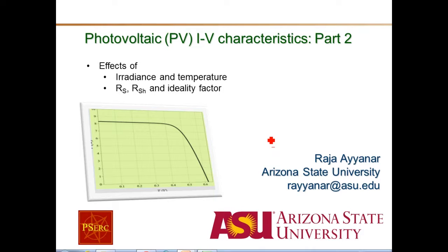This is the second part on the photovoltaic I-V characteristics. In this part we will look at the effect of environmental conditions like solar irradiance and temperature on the I-V characteristics, as well as the effects of various parameters like the series and shunt parasitic resistances and the ideality factor A, and their effect on the I-V characteristics.